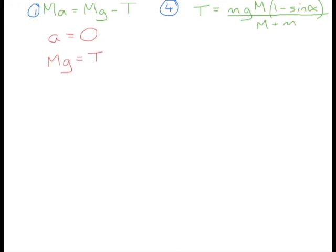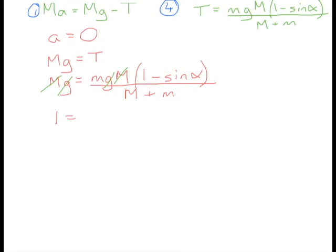Excellent. And we know what T is so we can say that Mg, that's big Mg, equals little mg big M (1 - sin α) divided by big M plus little m. Straight away we can cancel some terms here and get rid of big M, we can get rid of g on both sides, which leaves us with 1 equals little m (1 - sin α) over big M plus little m. So we can then say big M plus little m equals m take away, we're expanding out these brackets, m sin α.